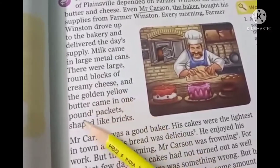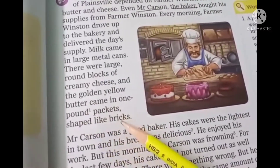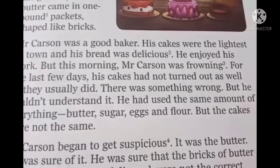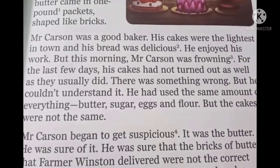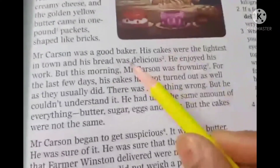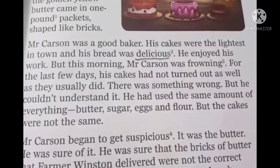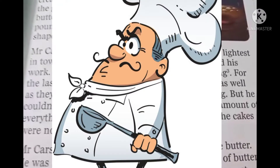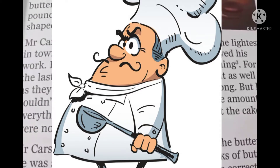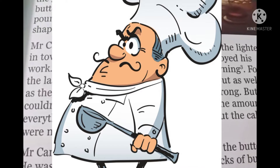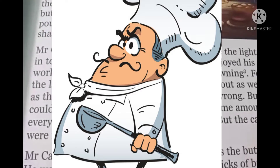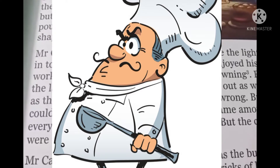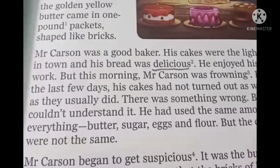The golden yellow butter came in one pound packets shaped like bricks. Mr. Carson was a good baker — his cakes were the lightest in town and his bread was delicious, meaning tasty. He enjoyed his work. But this morning, Mr. Carson was frowning. When someone is frowning, they are usually worried or annoyed — they bring their eyebrows closer together.